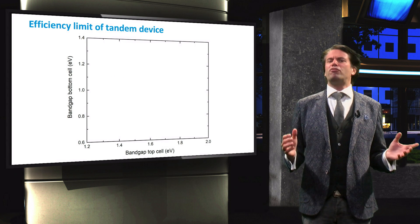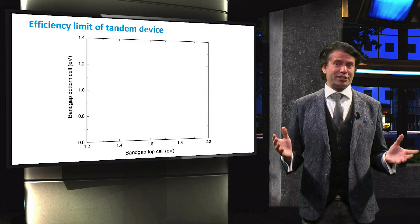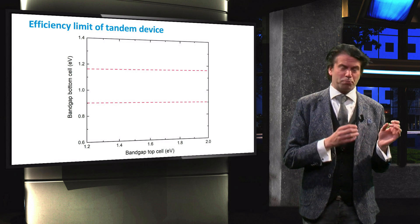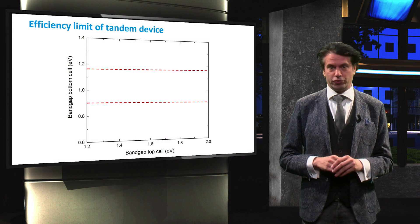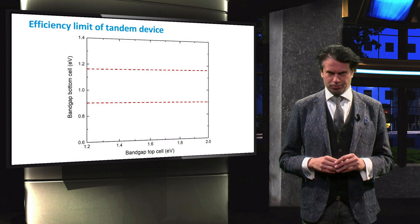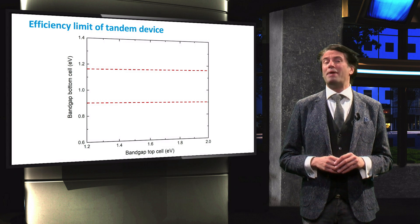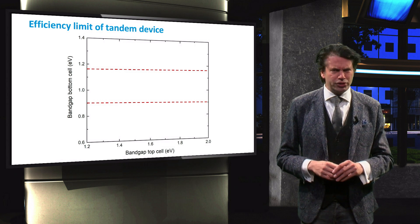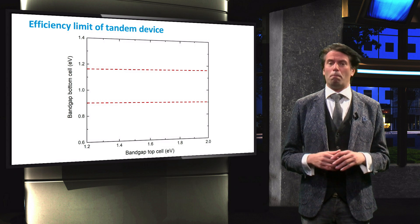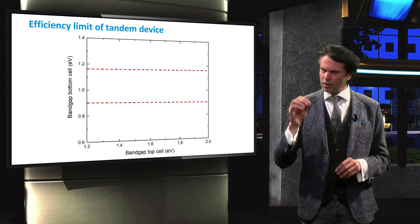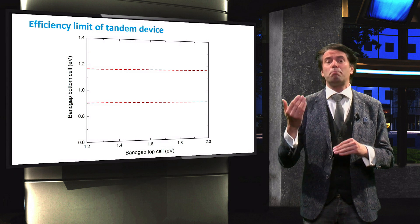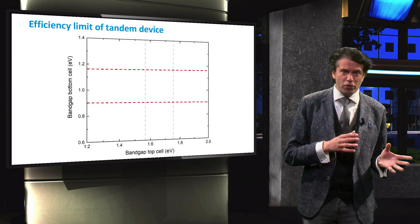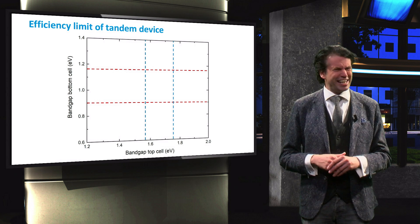The optimal bandgap of a bottom cell in a tandem configuration ranges from approximately 0.9 eV up to 1.2 eV, depending on the design considerations. Silicon with a bandgap of 1.12 eV is therefore a suitable bottom cell. The top cell in a tandem configuration should have a higher bandgap in the range of 1.5 eV up to 1.8 eV.